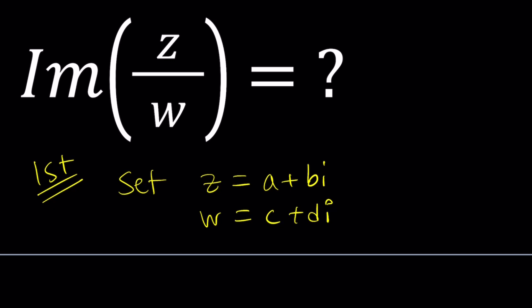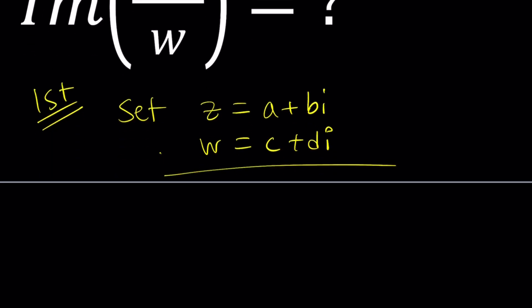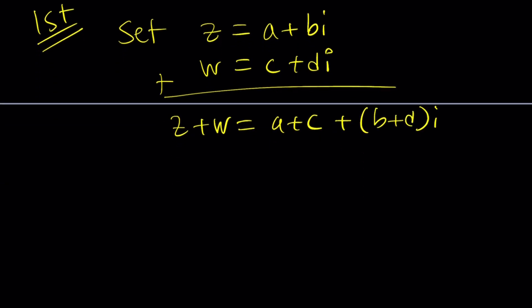Now, what is Z plus W? Well, if you just add them, Z plus W is going to be A plus C plus B plus D I. You add the real parts, you add the imaginary parts. If not, please check out the lecture notes.